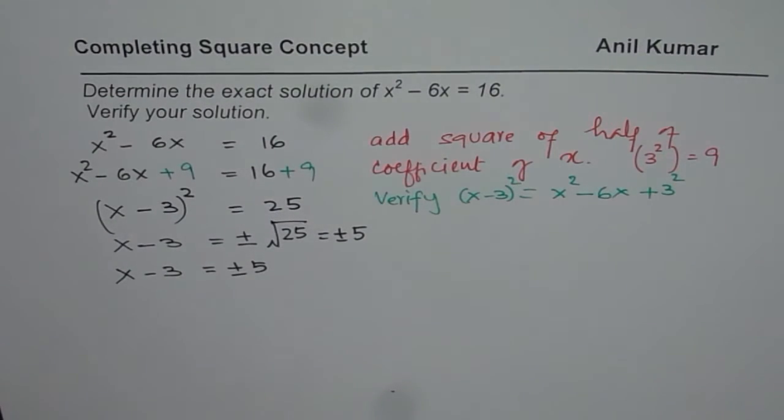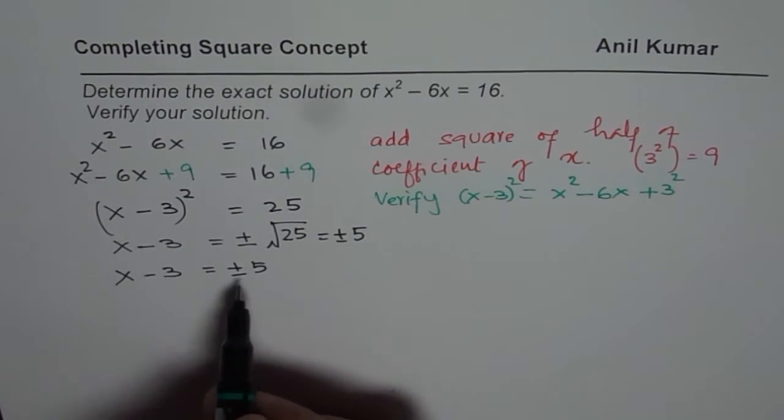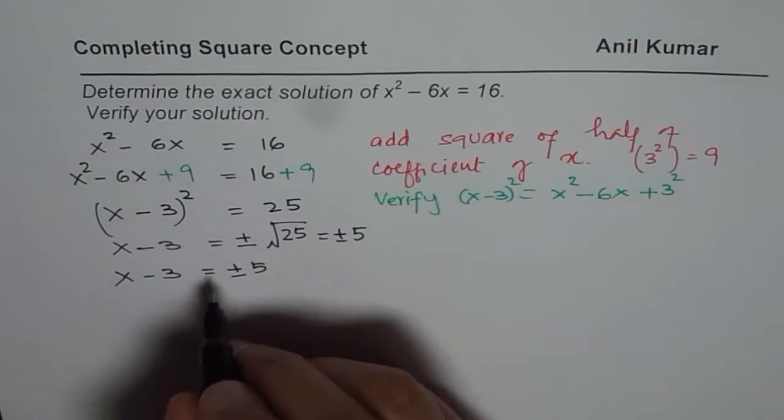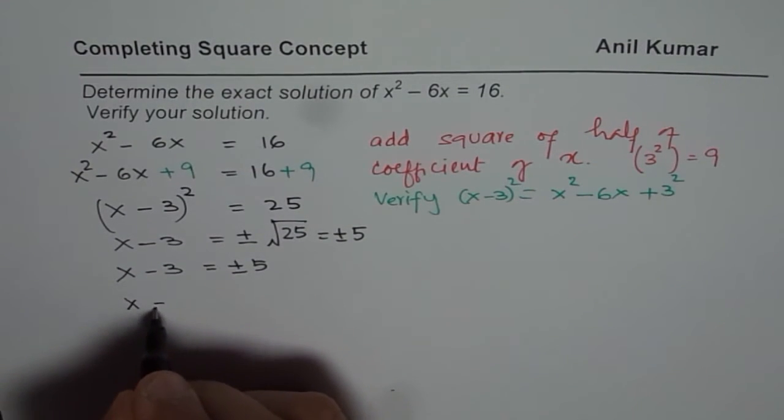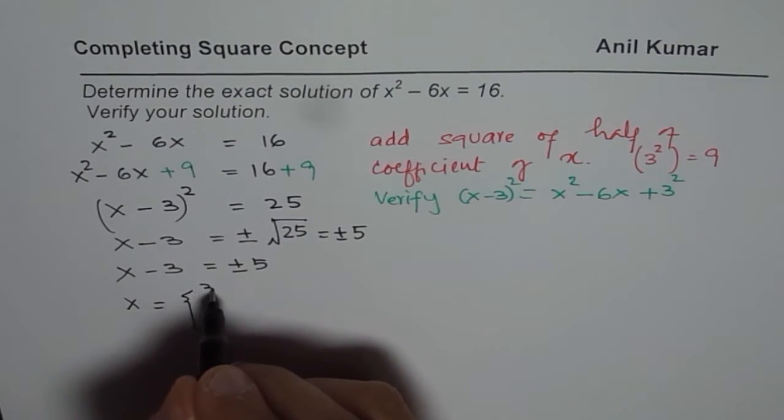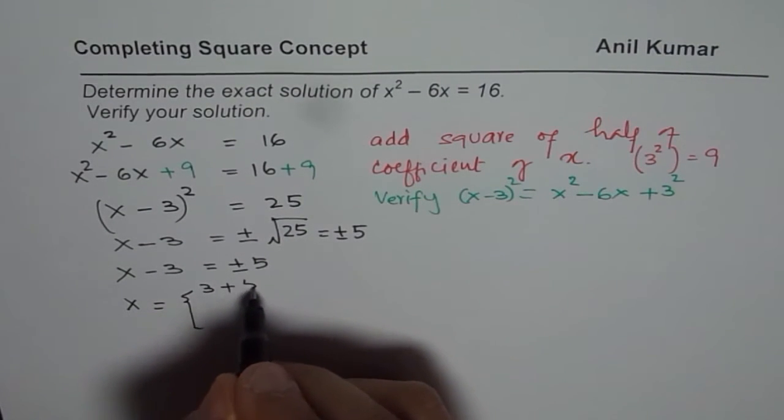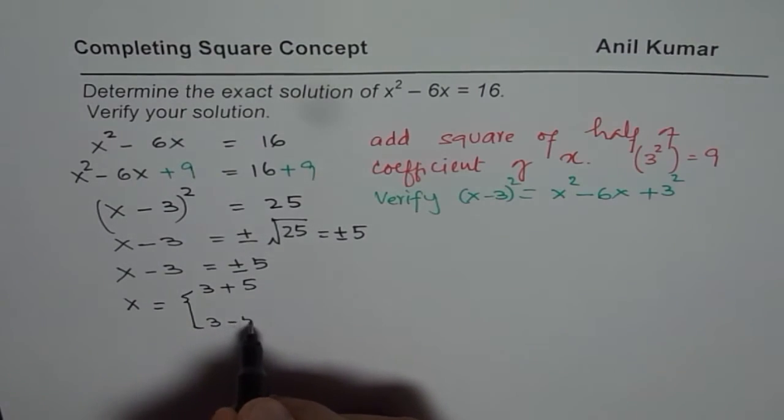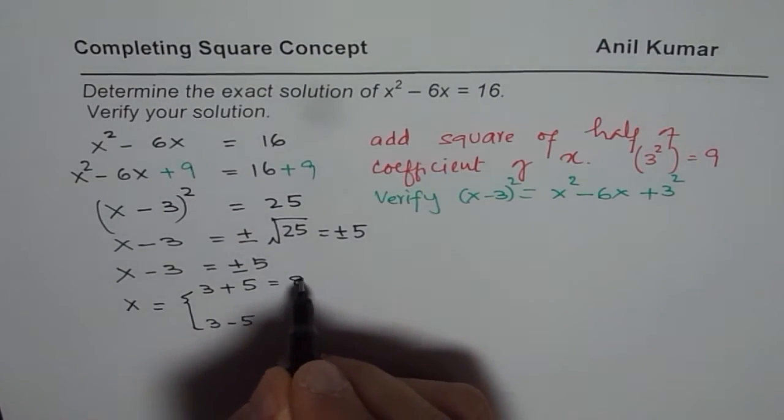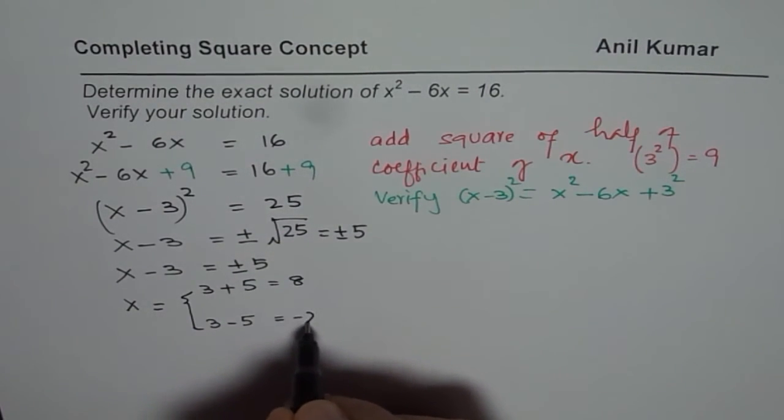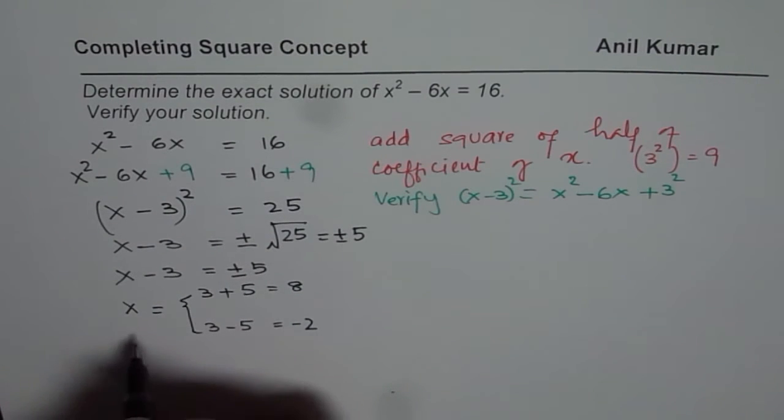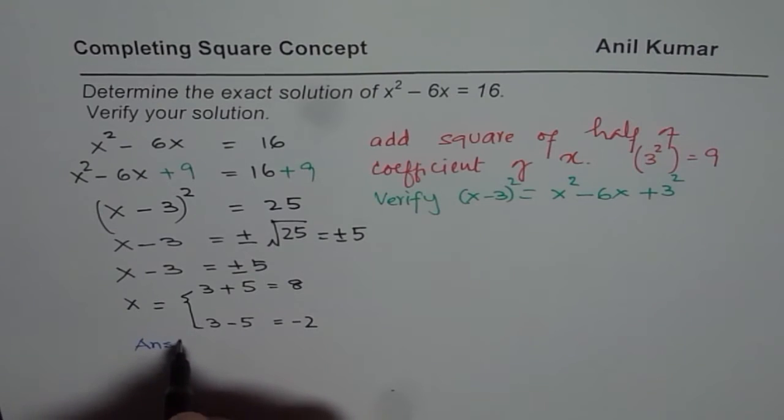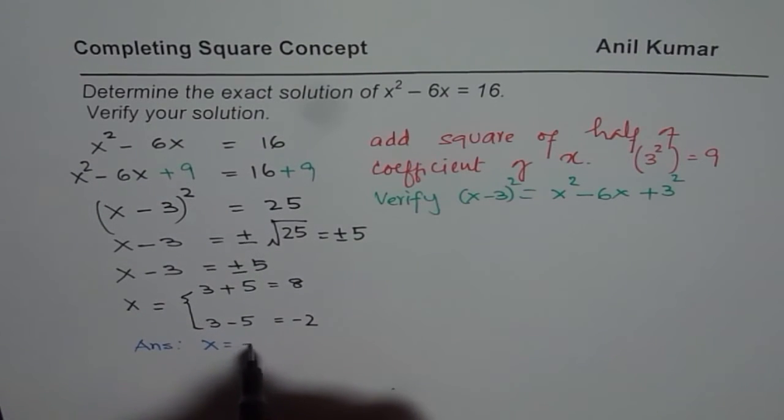So, that means that there are two solutions. So, two solutions. We could write each solution as x is equal to, one of the solution is 3 plus 5, the other one is 3 minus 5. 3 plus 5 is 8, 3 minus 5 is minus 2. So, we have two solutions. Let me write down the solutions as my answer. So, my answer is x equals to minus 2 or 8.